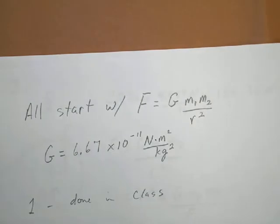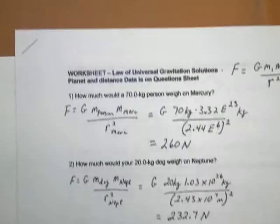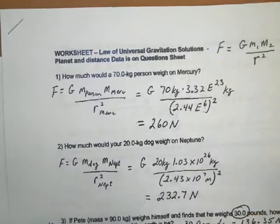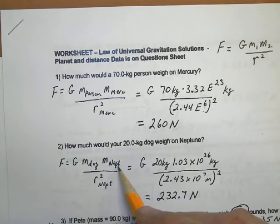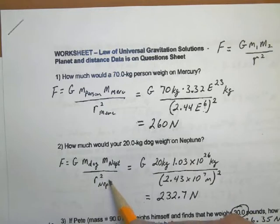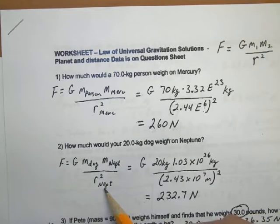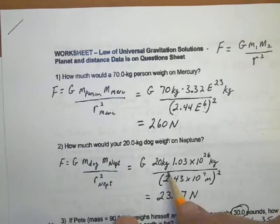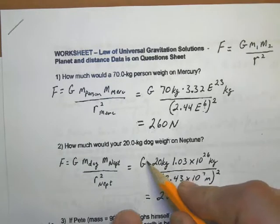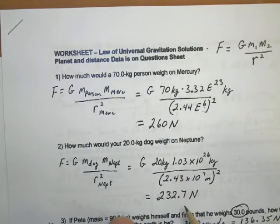And kind of same with number two, that's worked out on the sheet for you. If we look at it here, the only difference from number one is you use the mass of the dog, you need to use the mass of Neptune, and the radius squared of Neptune, because that's the distance between the mass of the planet and the center of mass of the dog. When you plug those numbers in, including the value of G on this page, you get the following number, 232.7 Newtons.